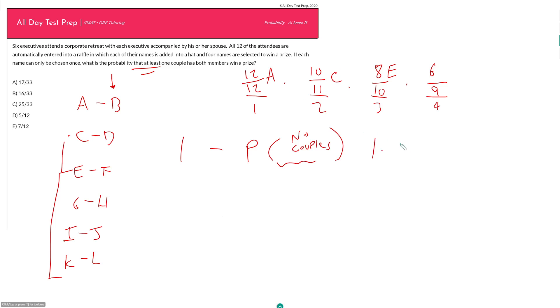So this is just one times 10 over 11 times 8 over 10. Maybe I'll keep this like this because I see that 10s cancel out here. Times 6 over 9, which is 2 out of 3. So this is really just 16 over 33.